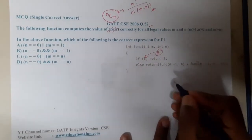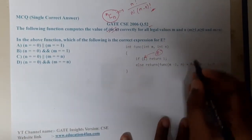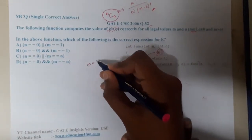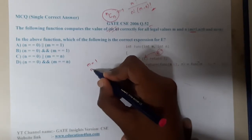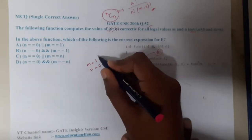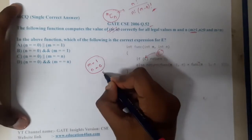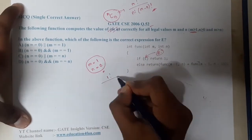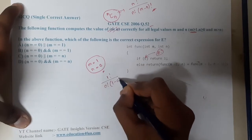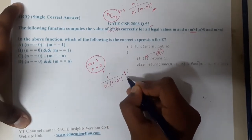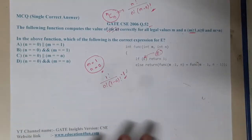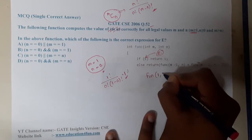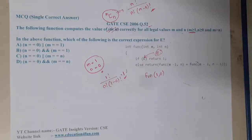Now that we know the formula, let us take the first example. The minimum value of m is 1 and the minimum value of n is 0. So with the formula: 1! / (0! × 1!) = 1. If we call func(1, 0), the result should be 1.